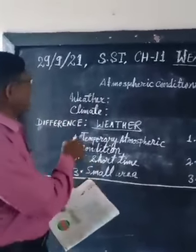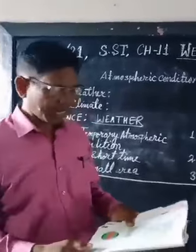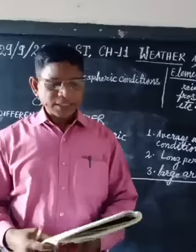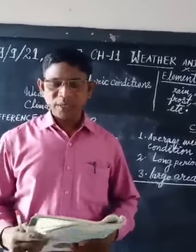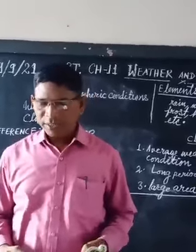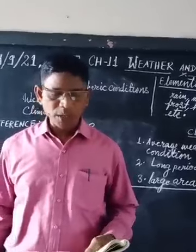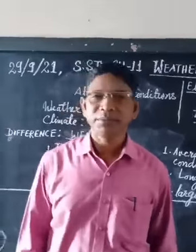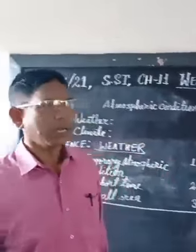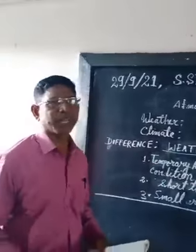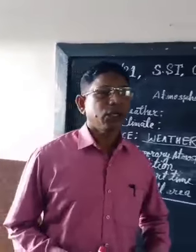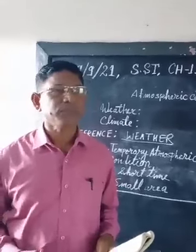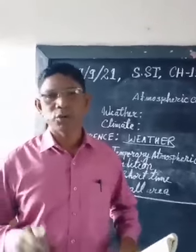Now we have to understand about climate. What is climate? Climate is the average weather condition of a place over a long period of time. For example, tropical zone or torrid zone.